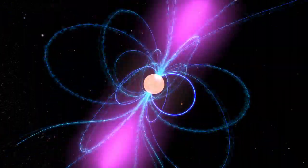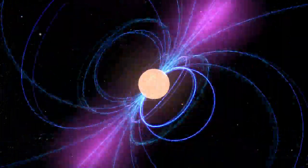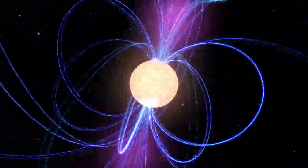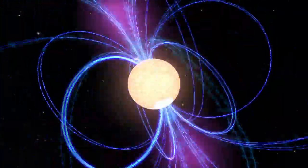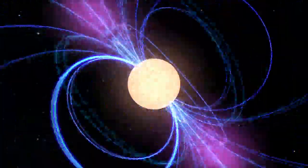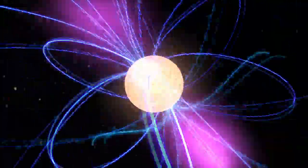Neutron stars spin between 7 and 40,000 times a minute and form with incredibly strong magnetic fields. Rapid spin and intense magnetic fields drive powerful beams of electromagnetic radiation, including gamma rays.